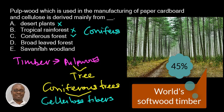Option D, broad-leaved forests, is incorrect. Option E, savannah woodland, is also incorrect. So the answer, Option C, is the right answer. Thank you for watching. See you in the next video. Bye-bye.